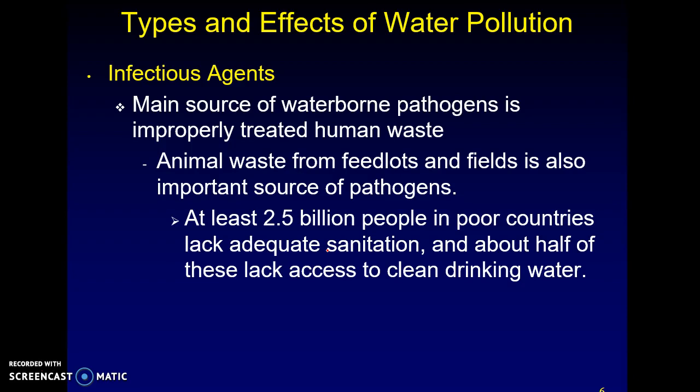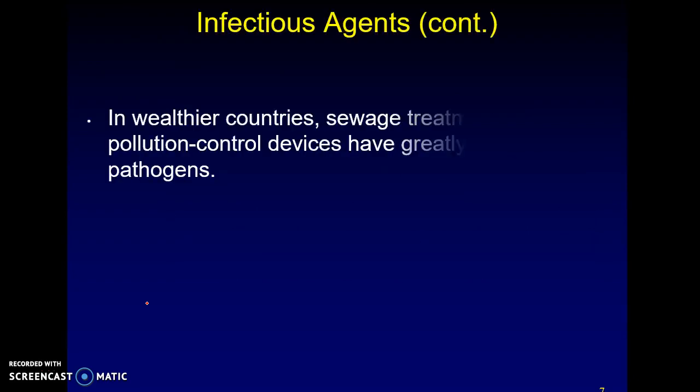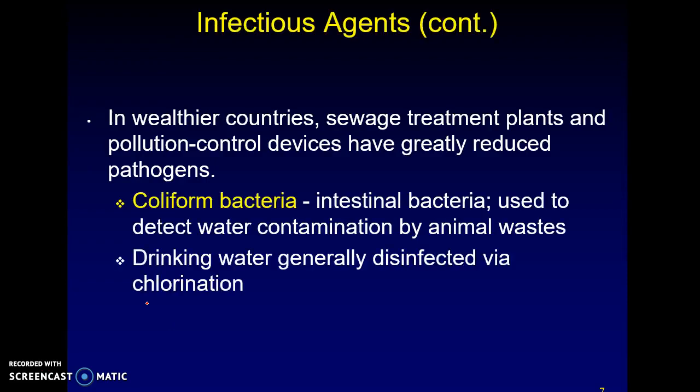We've talked about animal waste and coliforms — human and animal excrement that leaches into water sources. Waste contains a ton of bacteria that shouldn't be in your water. Coliform bacteria are a key indicator. In wealthier nations like the United States, water is cheaper because we have sewage treatment plants that clean and recycle water effectively. In underdeveloped or developing countries without proper sewage treatment systems, water is actually more expensive.